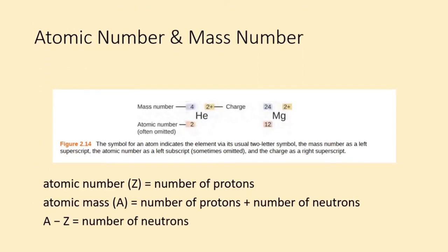Atomic number Z equals number of protons. Atomic mass A equals number of protons plus number of neutrons. As Z equals number of neutrons.